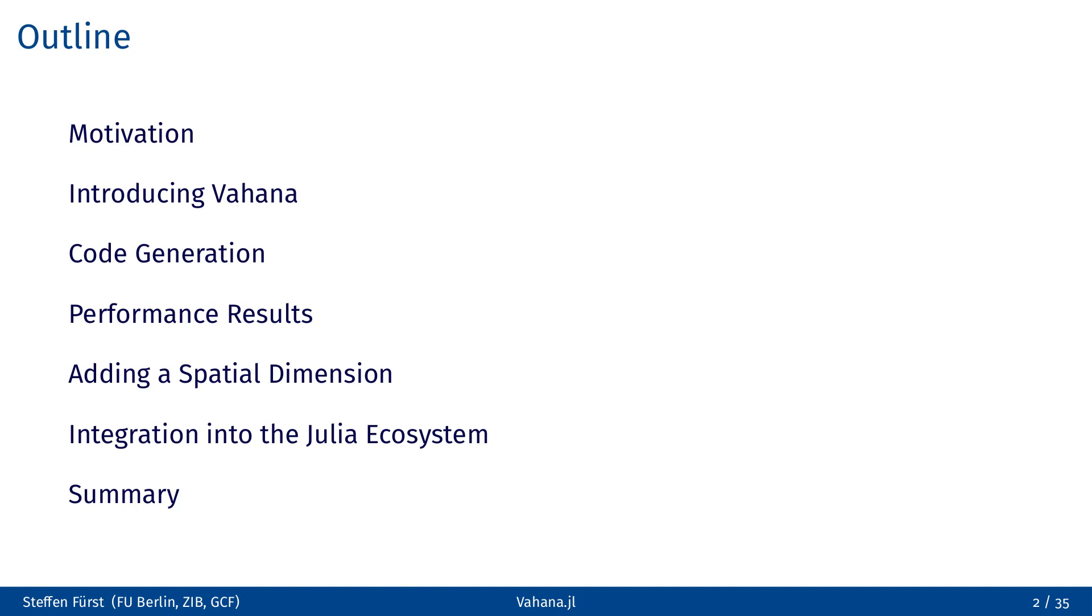Then I will sketch some implementation details of Vahana and show how Julia's metaprogramming capabilities are used to produce optimized code. By means of simulation runs of two different models I will show that this indeed leads to performant results. Afterwards I discuss how Vahana can handle spatial information via discrete rasters, and before I end with the summary, I'll explain how Vahana interacts with various Julia packages.